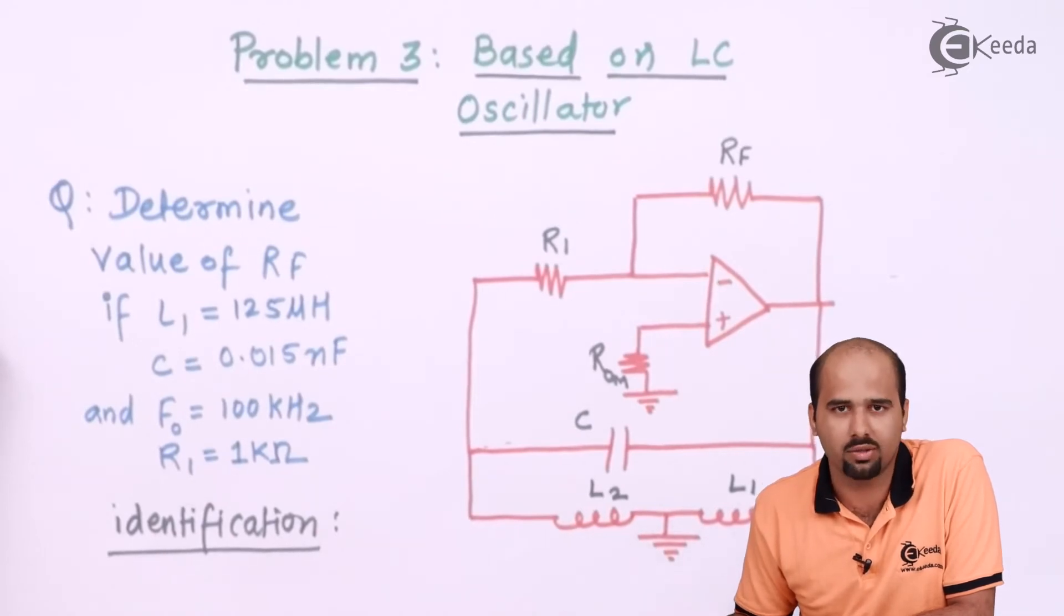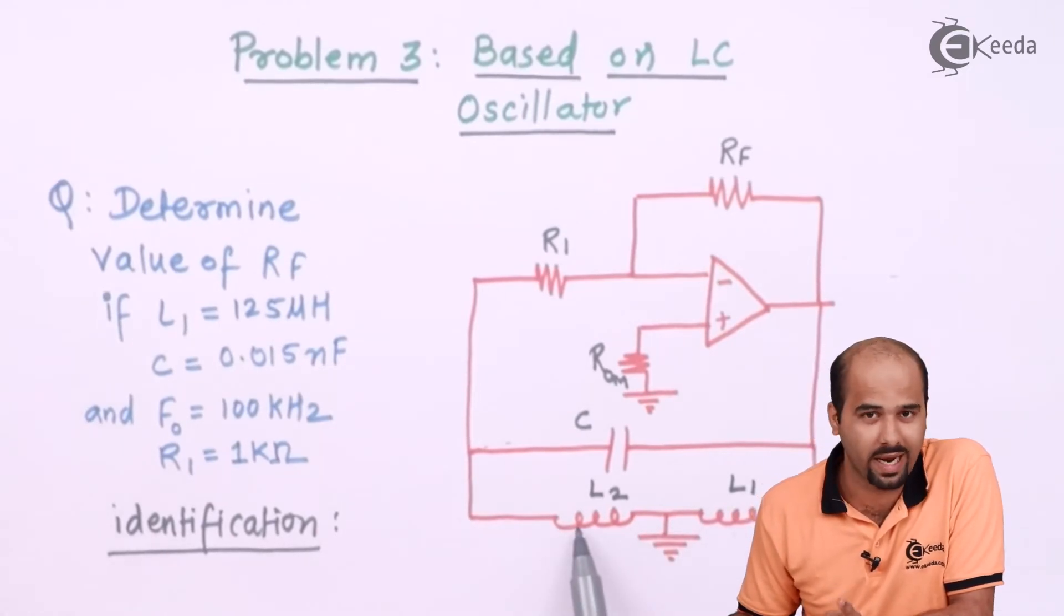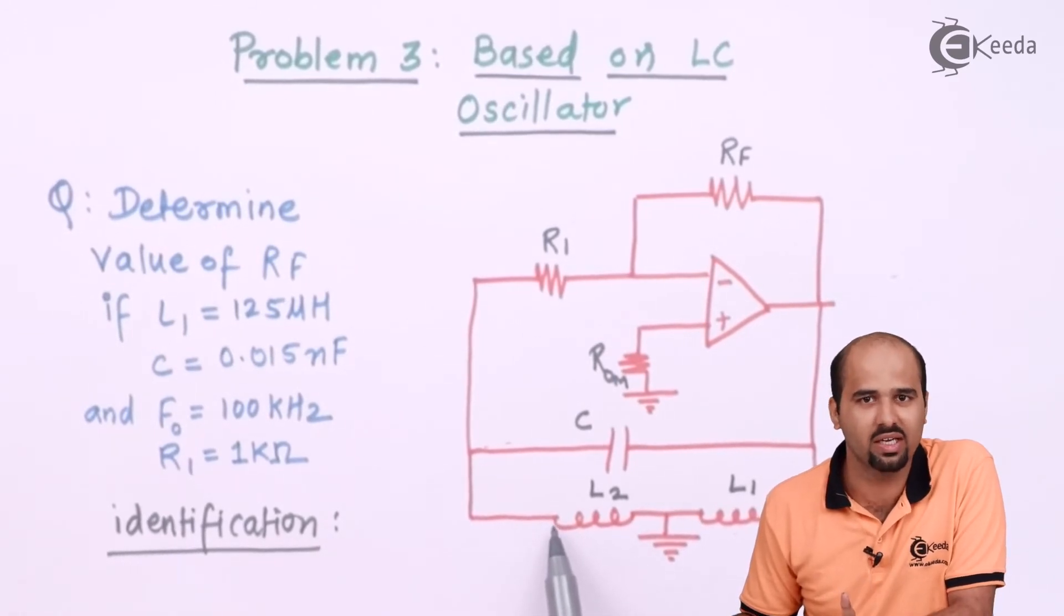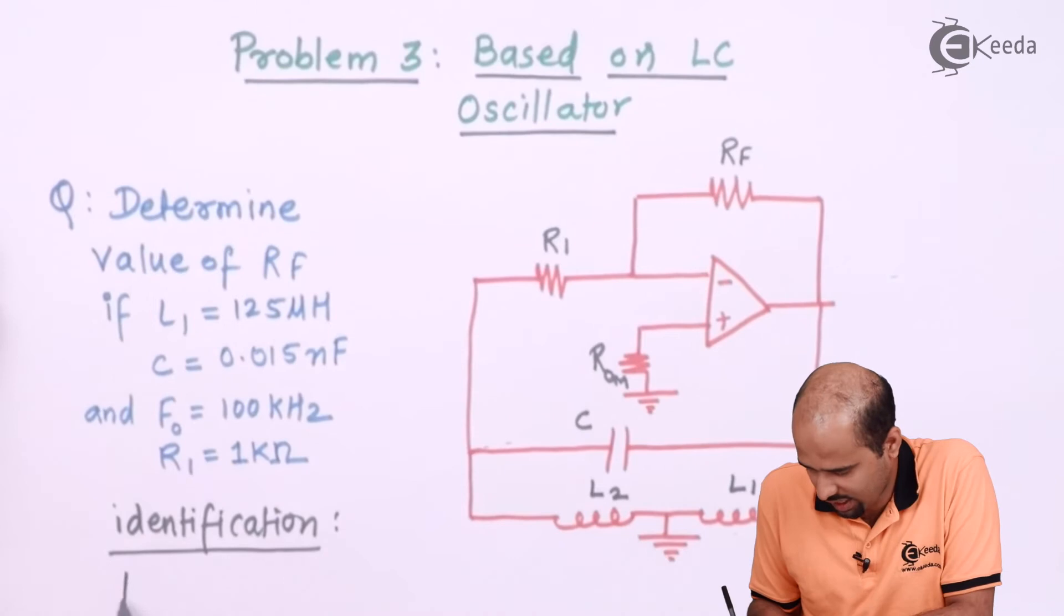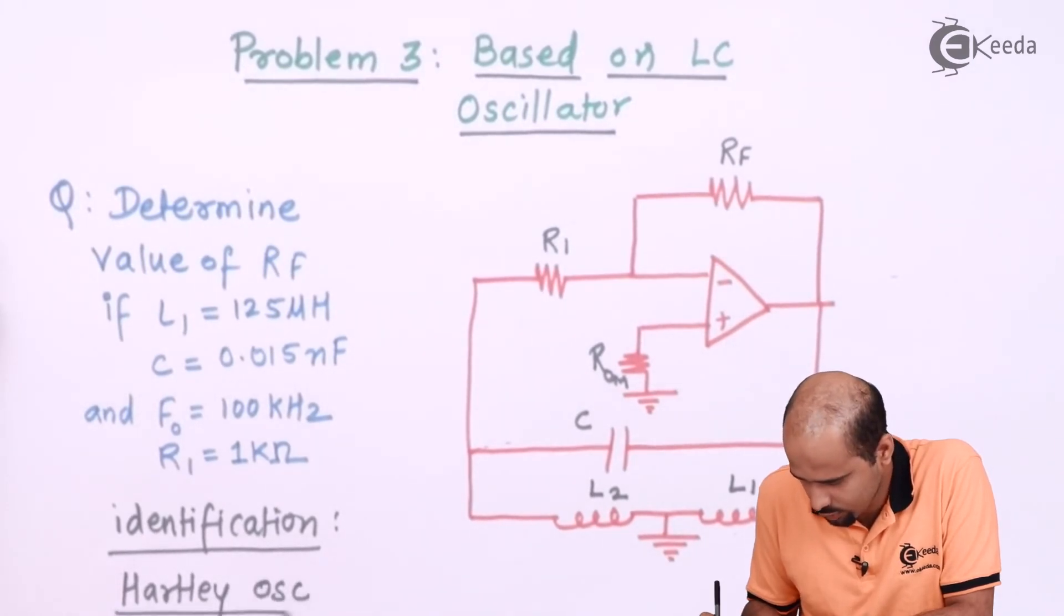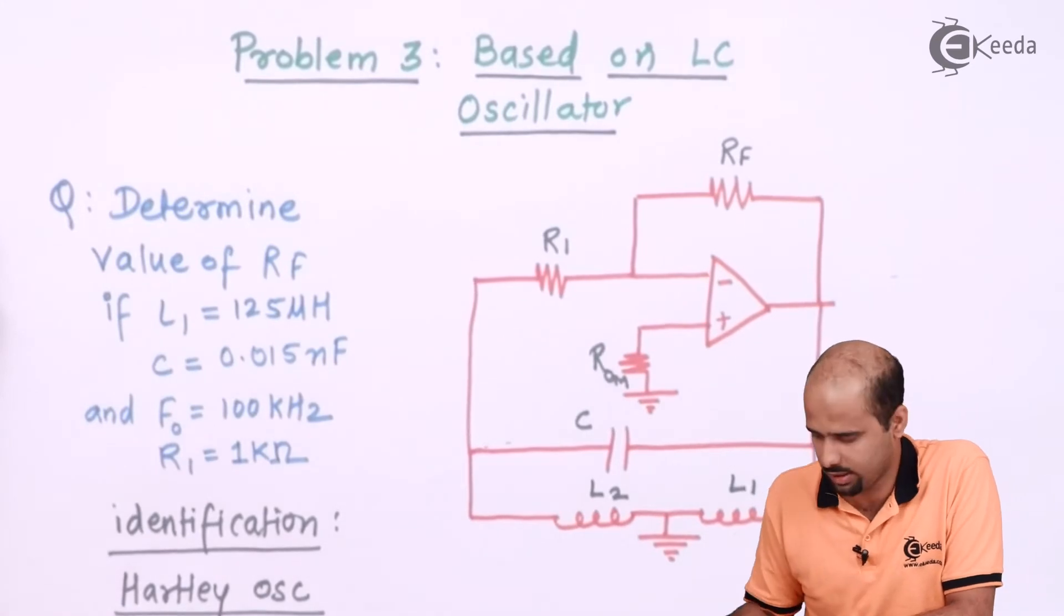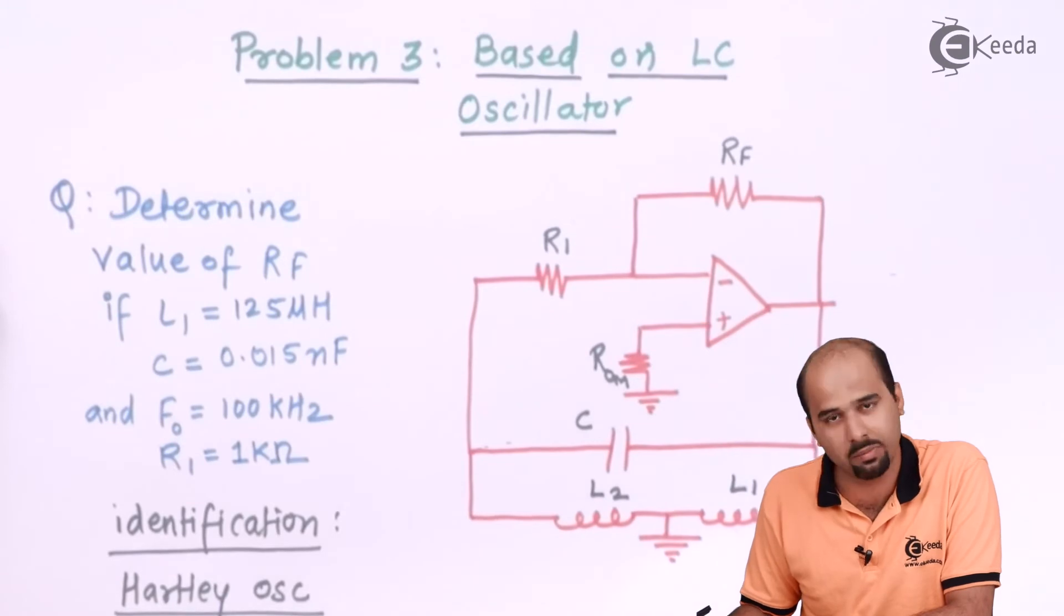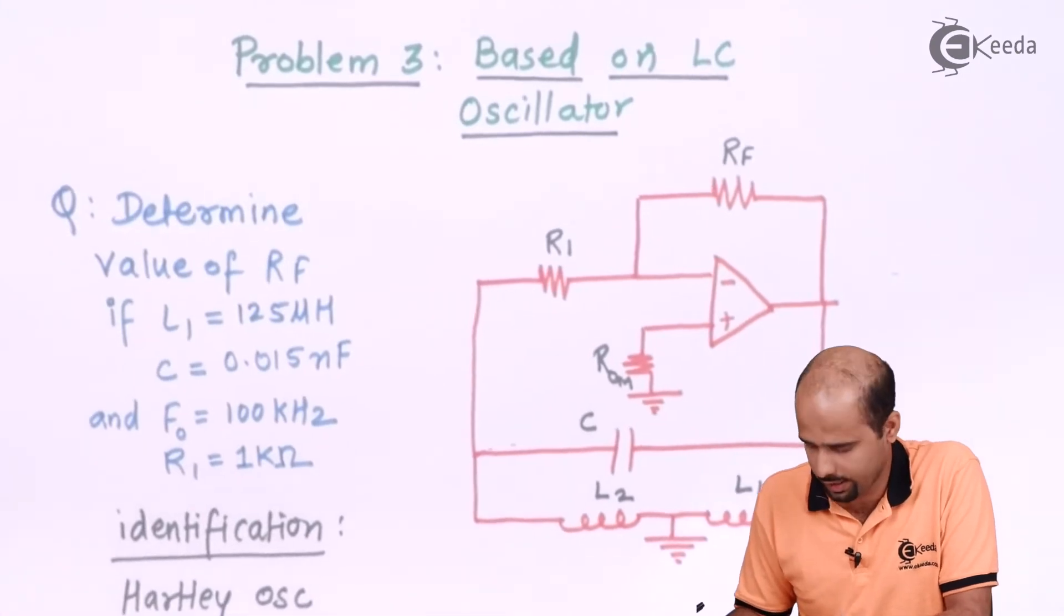right? Inductor ka unit, Henry, Henry with H, H for Hartley, right? So this is your Hartley oscillator, two inductors, so Hartley oscillator, simple, two inductors along with parallel combination with capacitor as a feedback circuit, it forms Hartley oscillator.